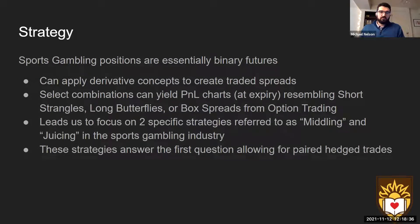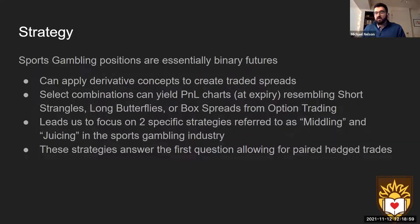For those unfamiliar with the sports betting market, positions are essentially binary futures — you put money on one side of a line and you either win and get the price return, or you lose and get nothing. Because of this, we can apply derivative concepts to create traded spreads. By combining different pricings of the same prop from different books, we can yield PnL charts resembling short strangles, long butterflies, and box spreads. This led us to focus on two specific strategies: middling and juicing. These strategies answer the first question — can we minimize risk — and the answer is yes.